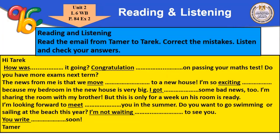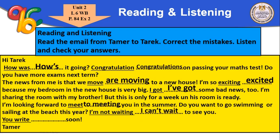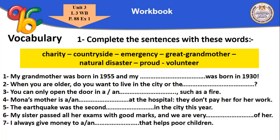Now reading and listening — read the email from Tamer to Tariq and correct the mistakes. Workbook page 88, exercise one — we have some vocabulary from lessons three and four. Complete the sentences with these words.